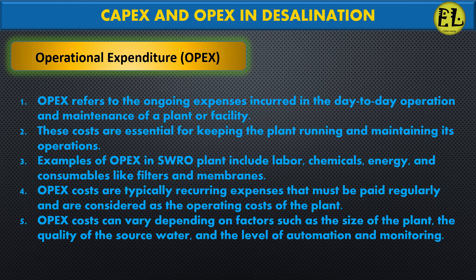Opex refers to the ongoing expenses incurred in the day-to-day operation and maintenance of a plant or facility. These costs are essential for keeping the plant running. Examples of opex in an SWRO plant include labor, chemicals, energy, and consumables like filters and membranes. Opex costs are typically recurring expenses that must be paid regularly and can vary depending on factors such as the size of the plant, the quality of the source water, and the level of automation and monitoring.